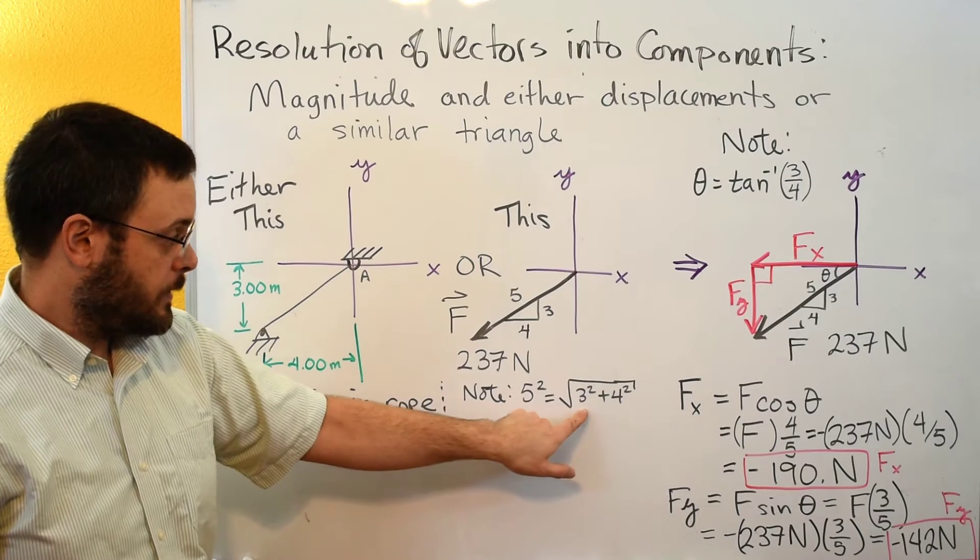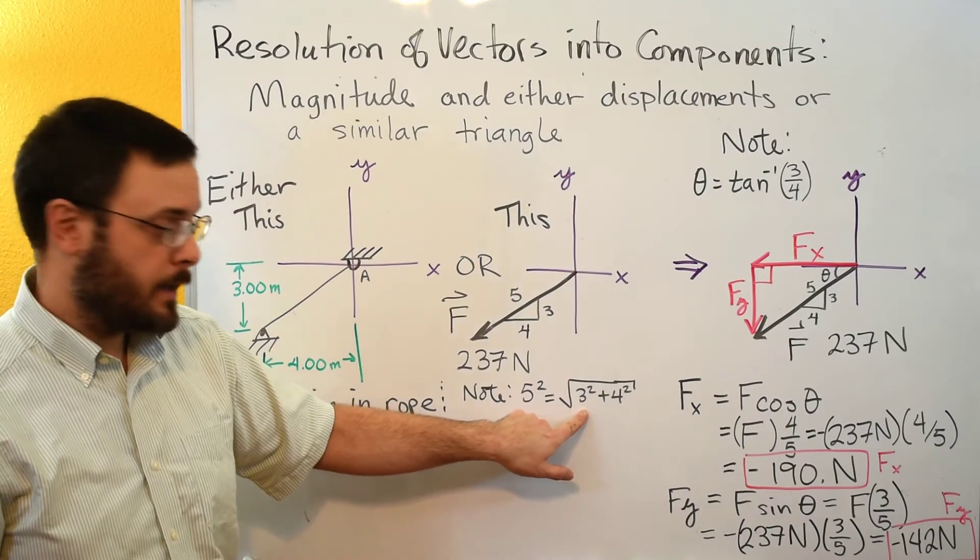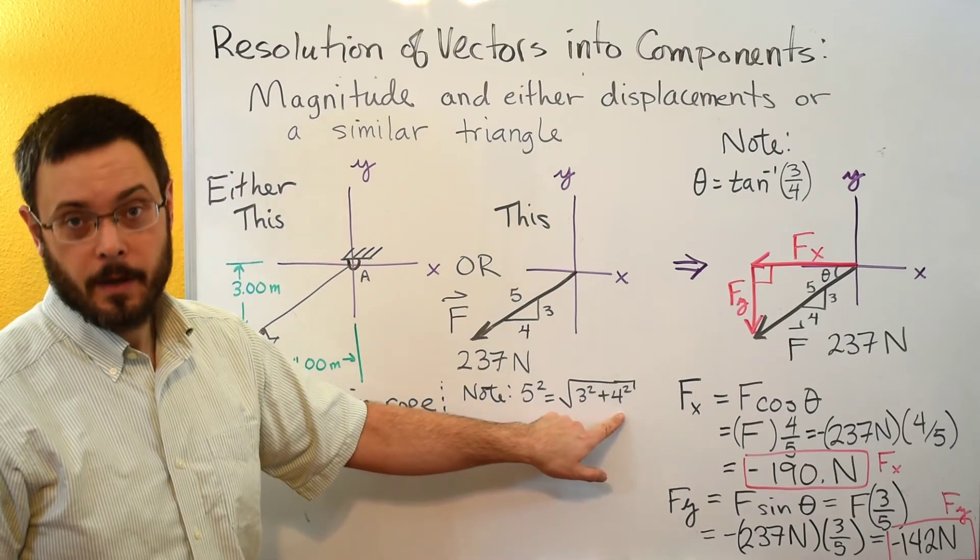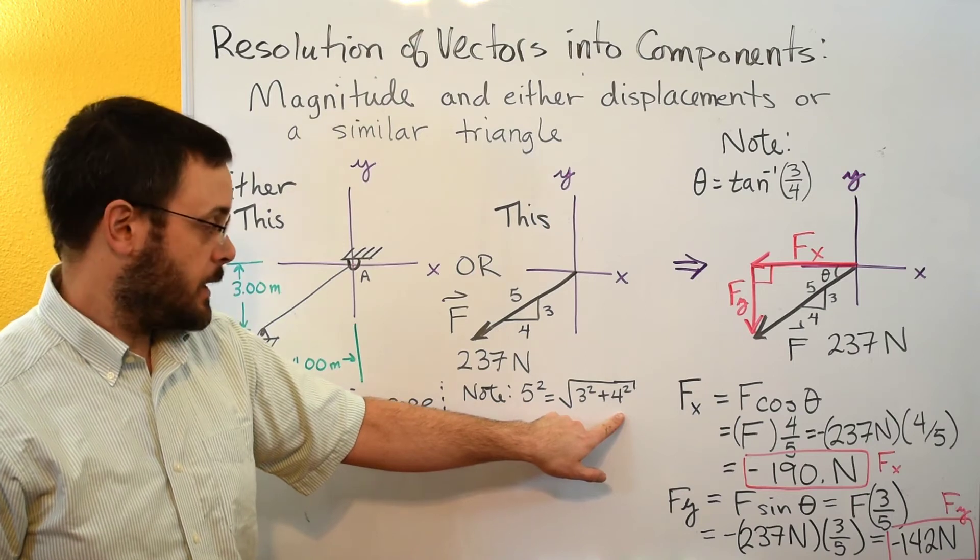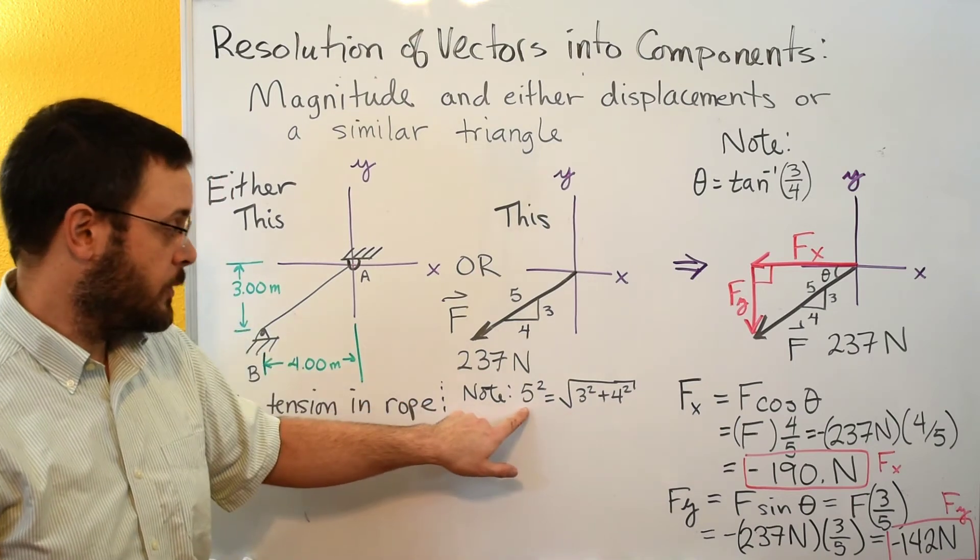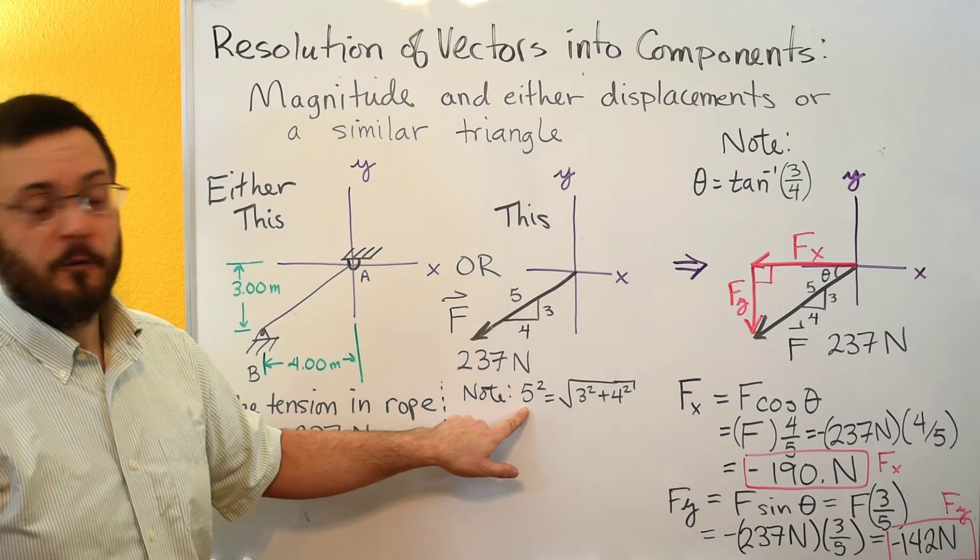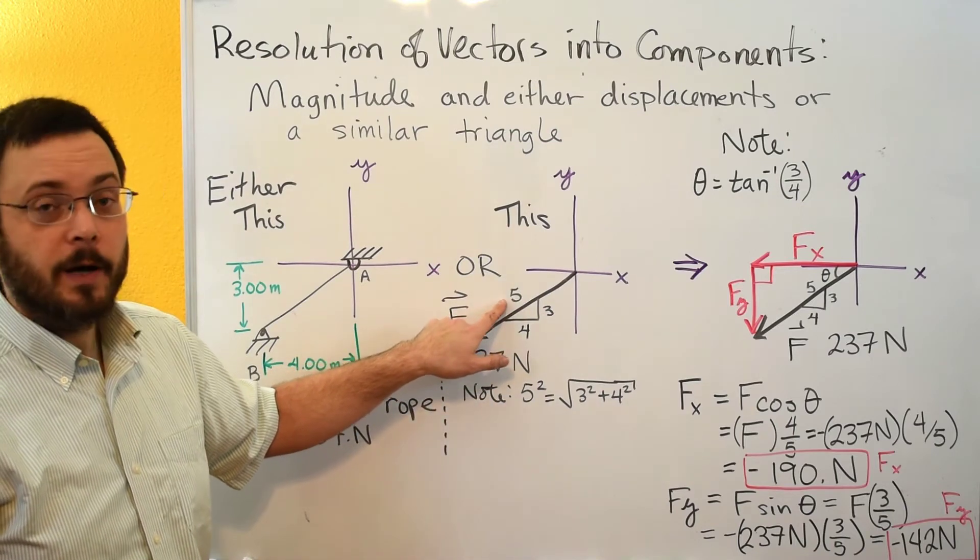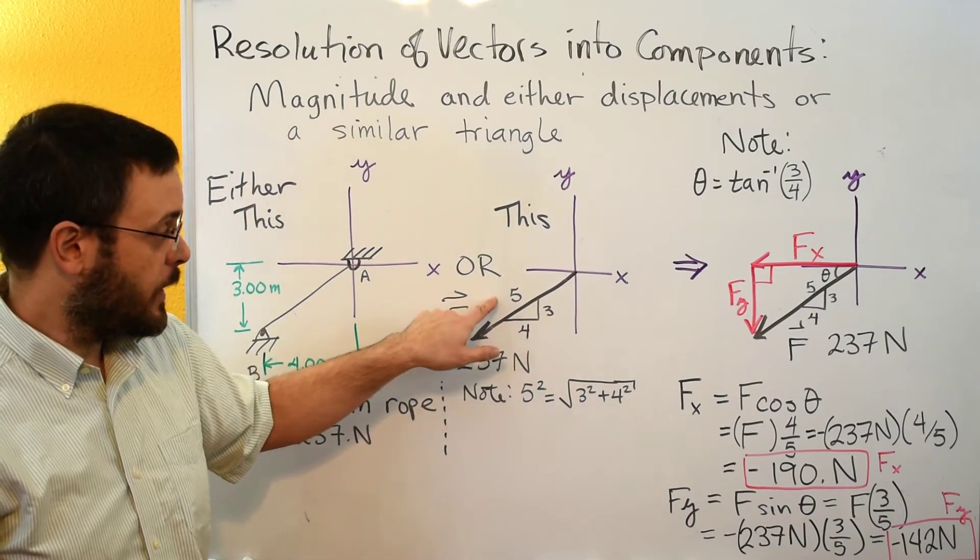So note that if you did 3 squared, you'd get 9 plus 4 squared would be an additional 16 would give you 25, taking the square root of 25 would give you that 5 that's the hypotenuse here. So that's where the 5 comes from.